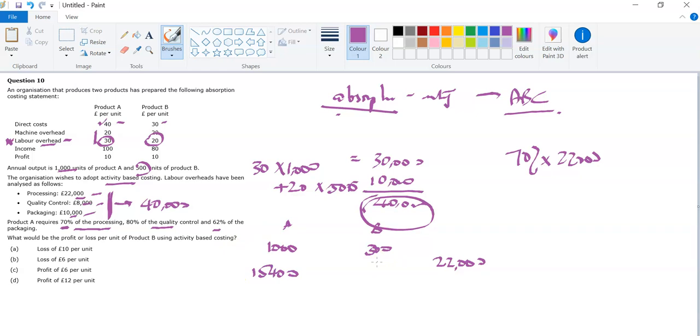Now let me look at quality control of 8,000. I'm told that 80% of this figure must go for A, so 80% times 8,000 is 6,400, and therefore 1,600 must go to B.